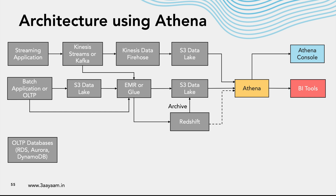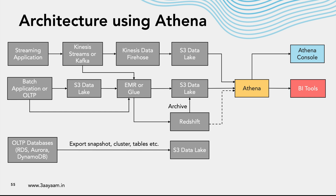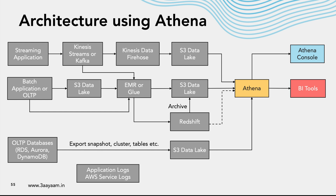We can also access Redshift directly using Athena by adding Redshift as a data source. Then we have OLTP databases like RDS, Aurora, and DynamoDB — these services have features using which you can export snapshots, export the cluster, or export individual tables to an S3 data lake. Again, as the data is in S3, Athena can access it and you can query the data using SQL.